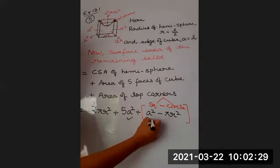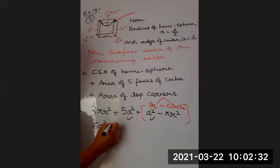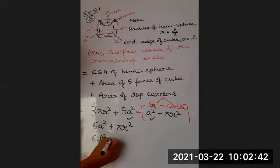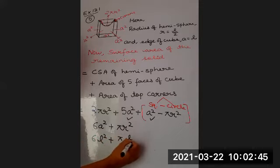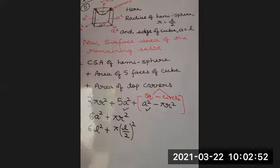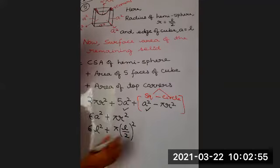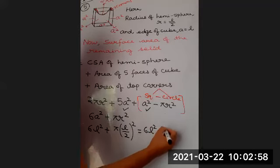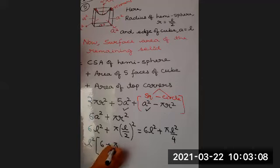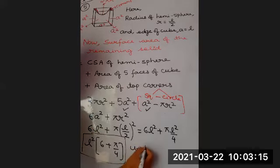So 2-pi-r-squared minus pi-r-squared gives pi-r-squared, and 5-a-squared plus a-squared makes it 6-a-squared — exactly the same as we were doing for surmounting. Now just replace a by l, so this becomes l-squared, and r by l by 2. This gives 6-l-squared plus pi times (l/2)-squared. Taking l-squared as common, we get l-squared times the quantity (6 plus pi by 4). This is your final answer. We are not given any units, so just write unit-squared.